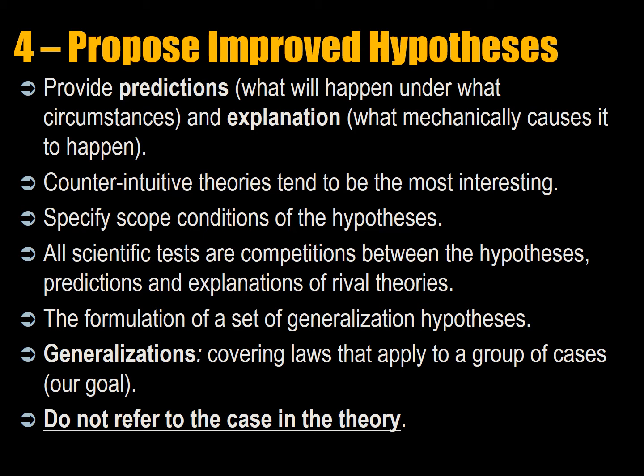Step four is to propose improved hypotheses. You've surveyed the shortcomings in the literature, and now you have to fix it — that's the core of your paper. It's very important that you provide both the predictions (what will happen under what circumstances) and the explanation (mechanically, how did this come about). Political scientists must have insight into the mechanics — the many steps between the emergence of an idea that turns into policy, gets passed into law, and is implemented as grand strategy. Counterintuitive theories that oppose conventional wisdom are the most interesting, so be bold and challenge it.